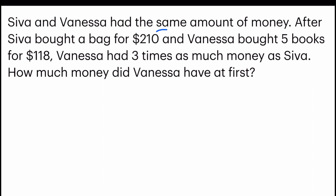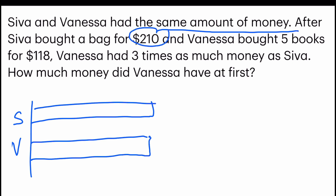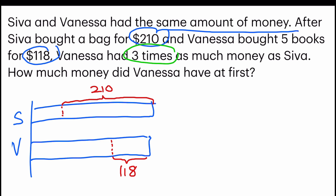Siva and Vanessa had the same amount of money — same kind of question. So Siva and Vanessa have the same portion. You're going to notice that one person is going to spend more; in this case it's Siva. So Siva's portion will be $210, and as for Vanessa, this portion is $118. Eventually they said that Vanessa had three times, so I'm going to give it three units, and Siva would be one unit.